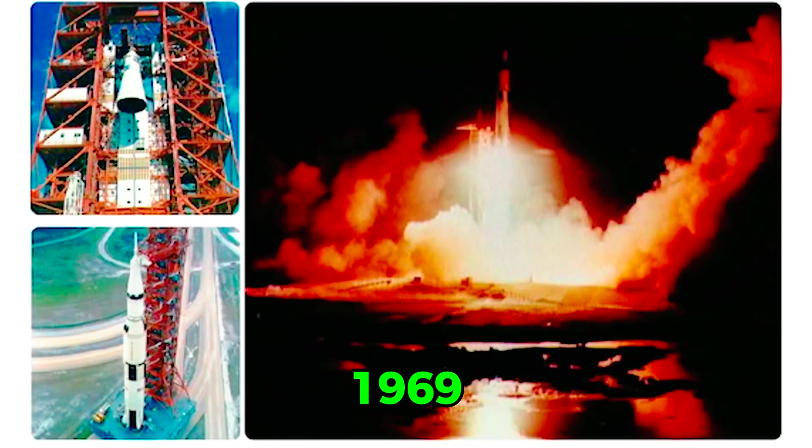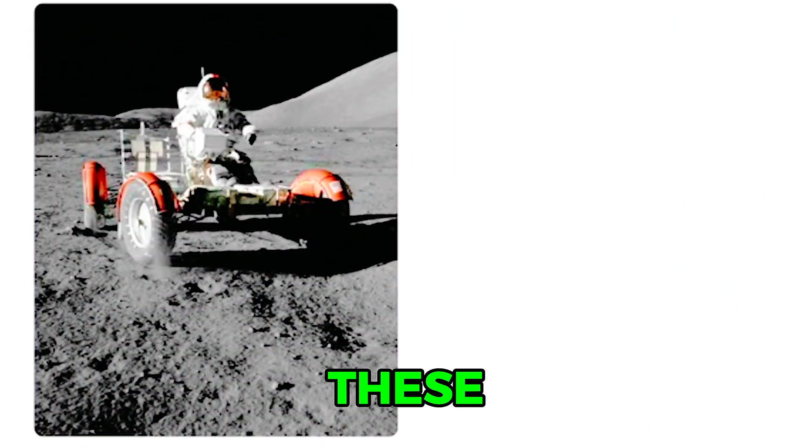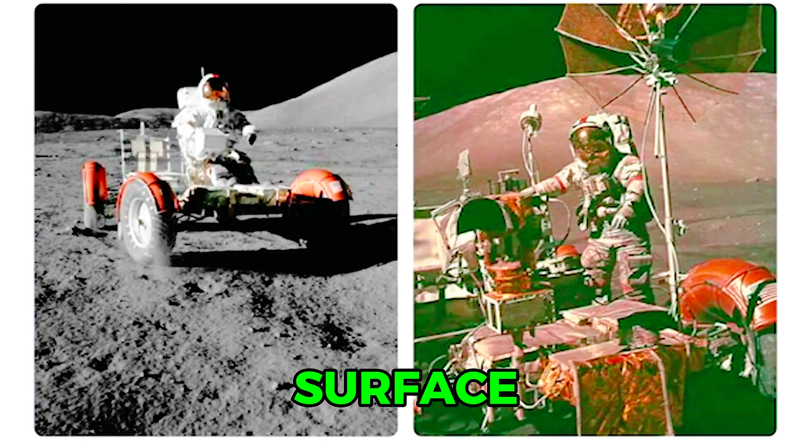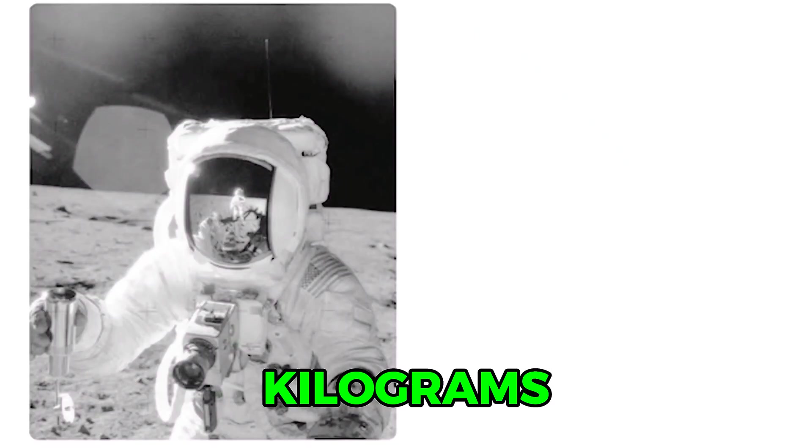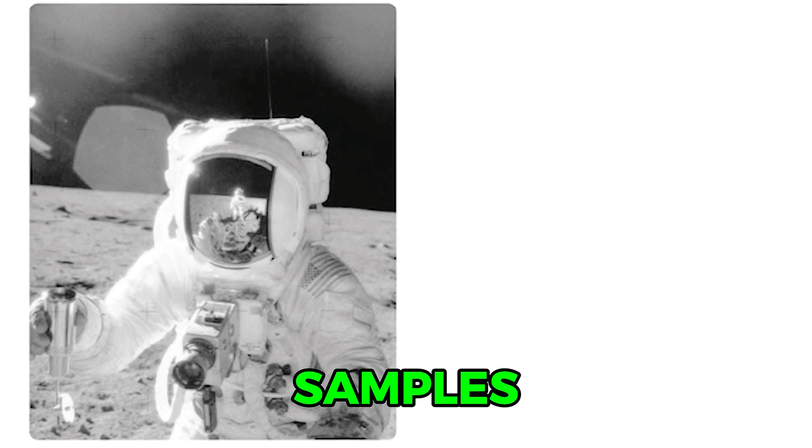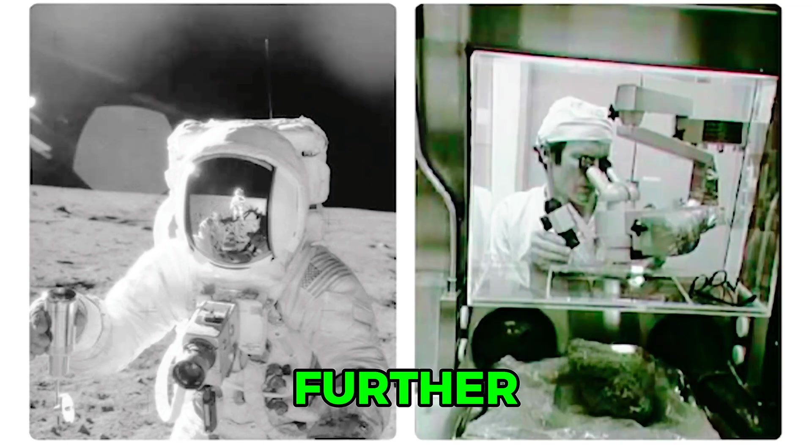The Apollo missions from 1969 through 1972 were a series of space flights that landed many Americans on the Moon. During these missions, the Moon's surface was studied using a lunar roving vehicle. Hundreds of kilograms of rock and soil samples were collected for further study.